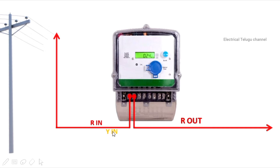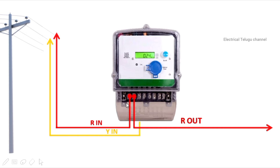Y-in means yellow wire — folding the yellow wire in the middle. Okay friends, next is Y-out. Y-out means yellow wire. You can see the yellow wire going to the switchboard.